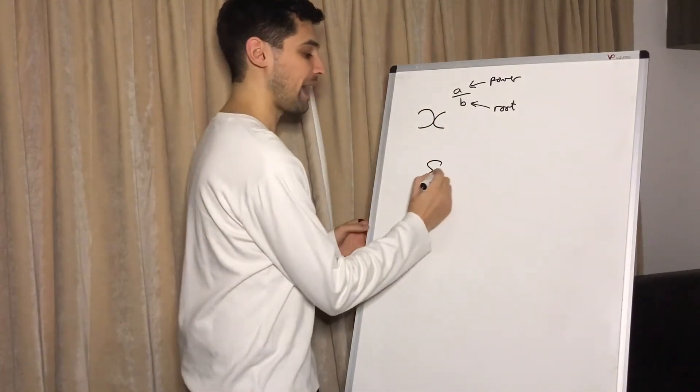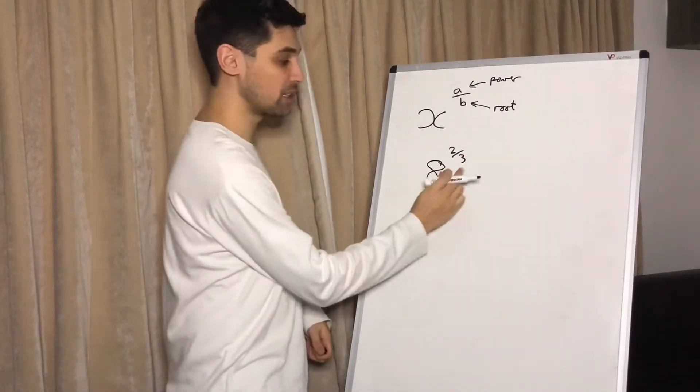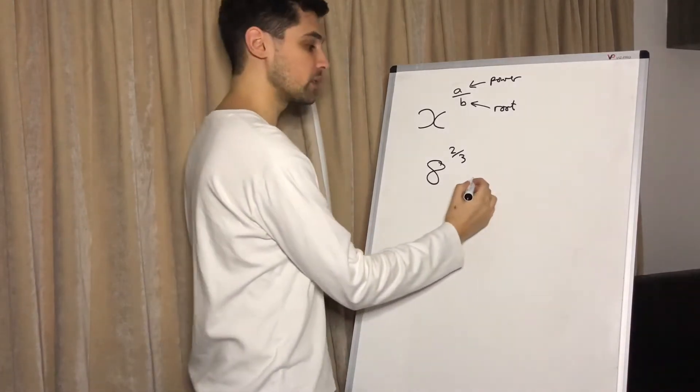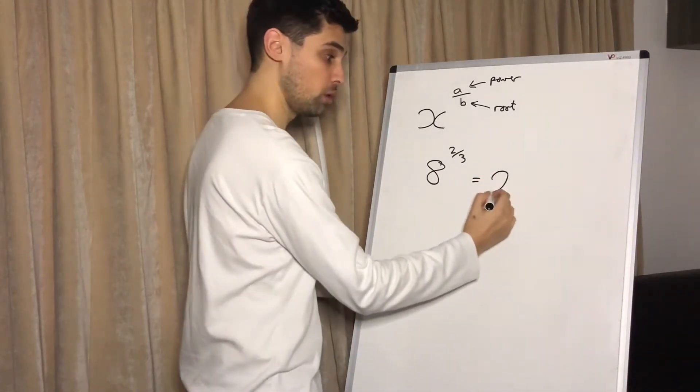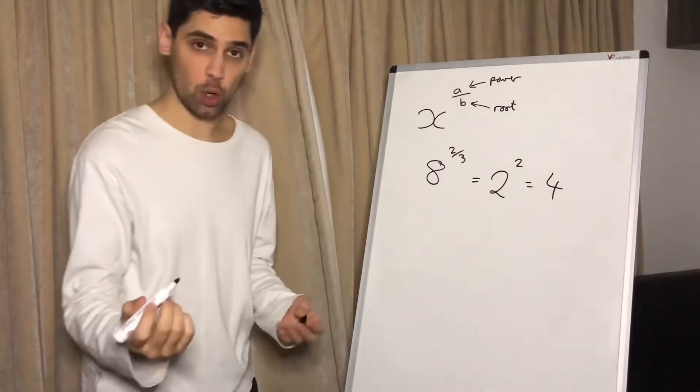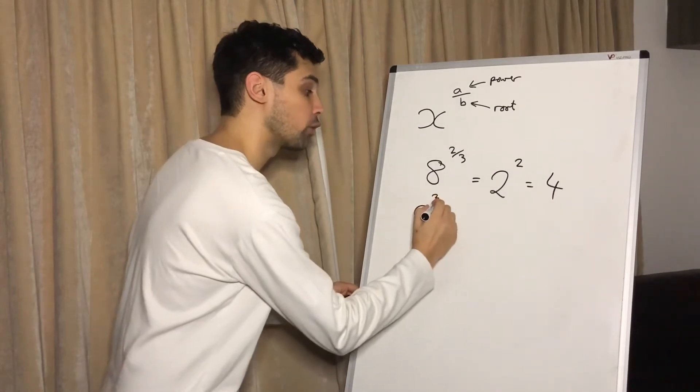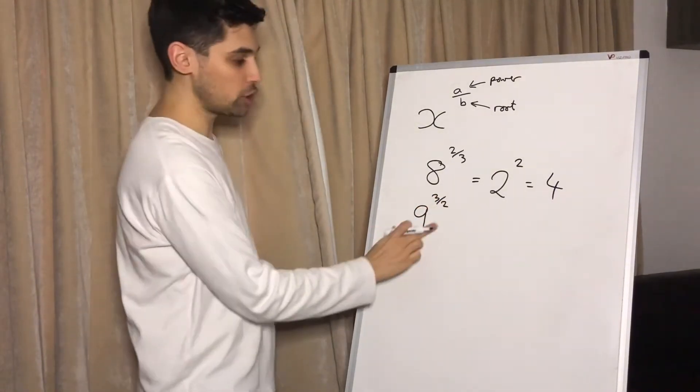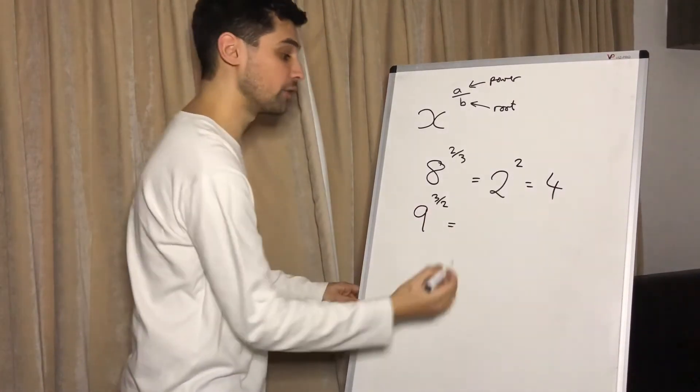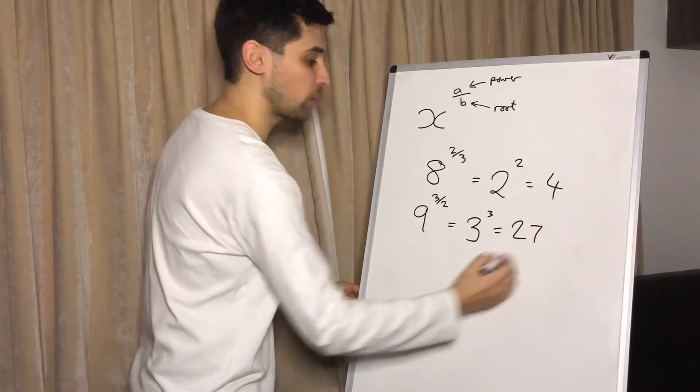So for example, if we've got eight to the power of two-thirds, what we want to do is the cube root squared. So what is the cube root of eight? Well, that's going to be two squared is four. Okay, how about nine to the power of three over two? So we're going to do the square root of nine and then cube it. The square root of nine is three cubed is 27.